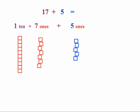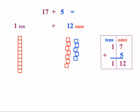So setting this up as 17 being 1 ten and 7 ones plus our 5 ones. Students can then physically take your manipulatives and combine all of the ones to be 12 ones.